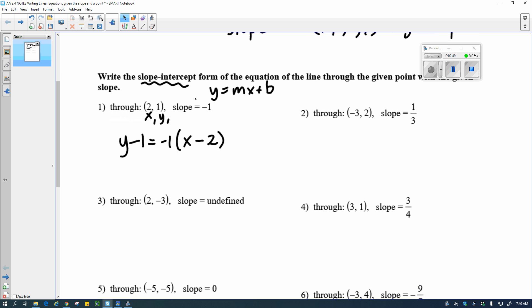So again, I need to manipulate it and move it around so I get the y alone. And to do that, I'm going to start by distributing the negative 1. So that's negative 1x plus 2. And then I'll get the y alone by adding the 1 on both sides. And I end up with y equals negative 1x plus 3. That's the final form of my answer. So it's put it in the spots and then move stuff around a little bit.